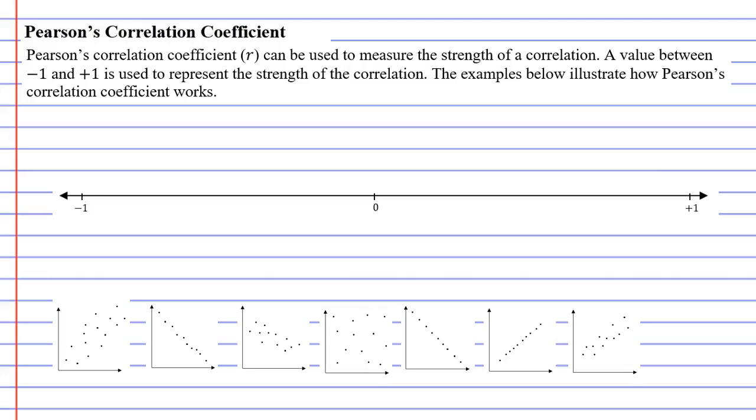This video is an introduction to Pearson's correlation coefficient. The symbol for Pearson's correlation coefficient is the letter or pronumeral r, and this is used to measure the strength of the correlation. When you calculate it, you will get a score anywhere between negative 1 and positive 1.